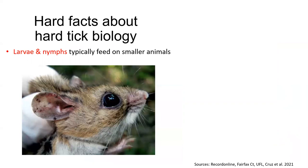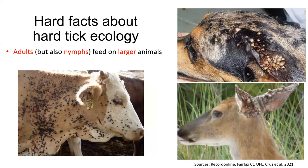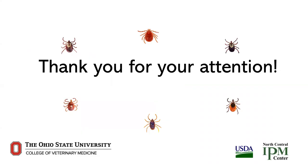Larvae and nymphs typically feed on smaller animals like small rodents, as seen here with this mouse, although there are exceptions. Adults, but also nymphs, typically feed on larger animals like deer, cattle, and dogs, but also people. Ticks generally get infected with pathogens like the Lyme disease bacteria when they are larvae or nymphs.